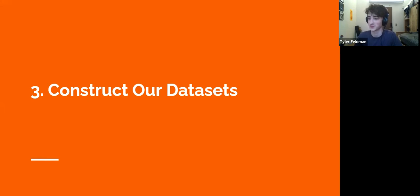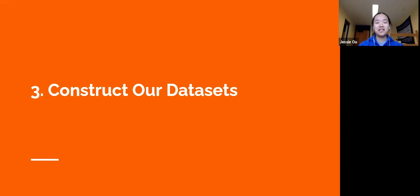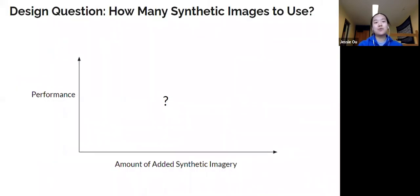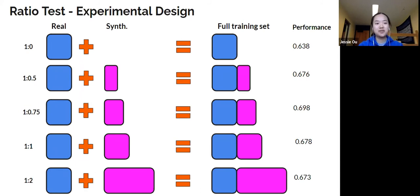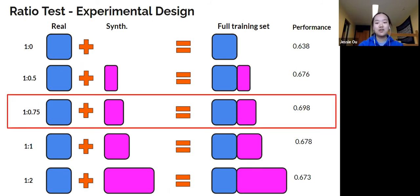Now Tyler has walked us through collecting and labeling images. We're ready to construct our data sets and run experiments on it. Our first question when constructing datasets is how much synthetic data should we use? If we add too much synthetic data, we run the risk of overfitting. However, if we add too little, synthetic data is not going to change our performance significantly. In order to find the optimal real-to-synthetic ratio, we designed a series of experiments testing varying ratios. We find that 1 to 0.75 yields the largest increase in performance. This means that for every 100 real images, we add 75 synthetic images.